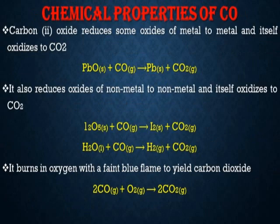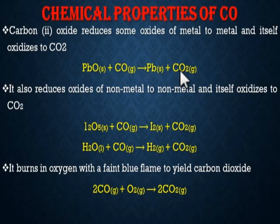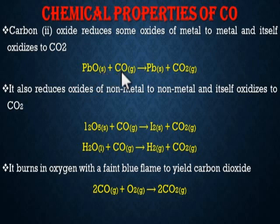Now let's look at the chemical properties of carbon monoxide. Carbon monoxide reduces some oxides of metals to metal, and itself is oxidized to carbon dioxide. So when lead oxide (PbO) solid reacts with carbon monoxide, it gives you lead metal and carbon dioxide is liberated. The oxygen attached to the lead is removed — a reaction involving removal of oxygen is called reduction. The oxygen is attached to the CO to give CO₂. So carbon monoxide has succeeded in reducing lead oxide to lead metal.